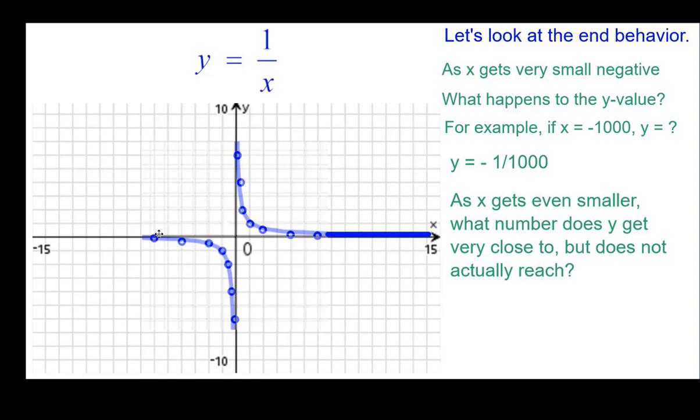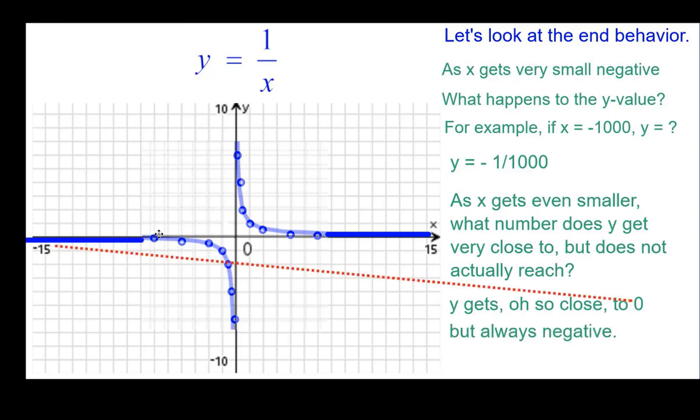And again, it gets really close to zero. But in this case, always negative. And so we show that with this line getting really close to the x-axis but a little bit below it.